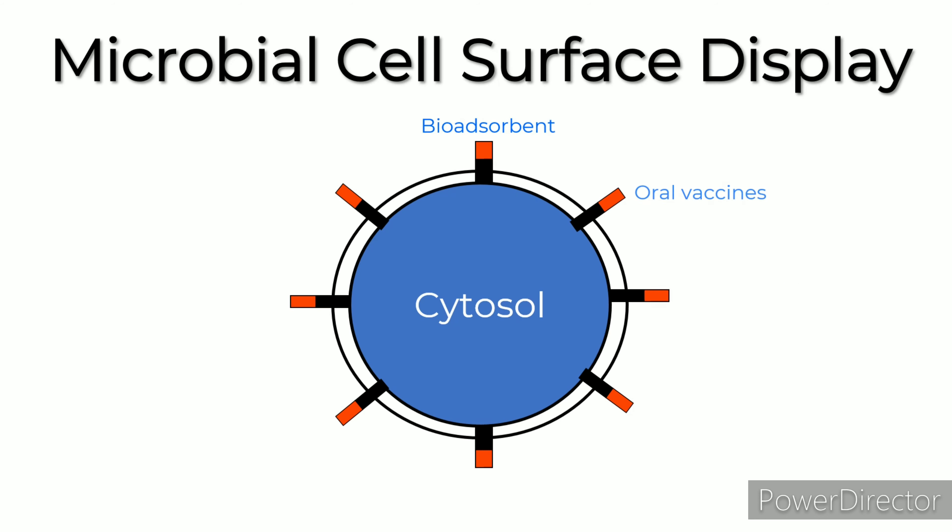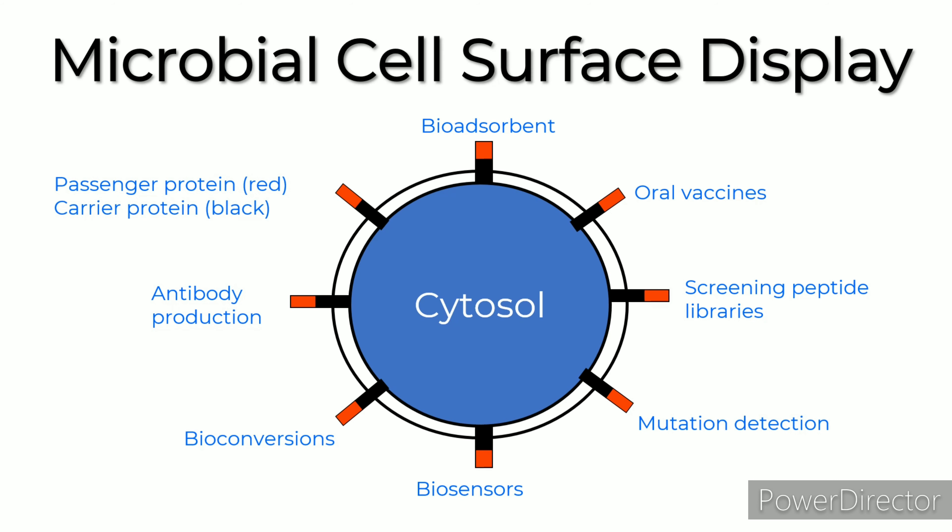Microbial cell surface display allows peptides and proteins to be displayed on the surface of microbial cells by fusing them with anchoring motifs. The passenger protein can be fused to a carrier protein by N-terminal fusion, C-terminal fusion, or sandwich fusion. Characteristics of the carrier protein, passenger protein, host cell, and fusion method all affect efficacy. Applications include bioabsorption, oral vaccines, screening peptide libraries, mutation detection, biosensors, bioconversions, and antibody production.